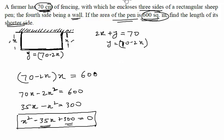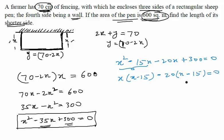So we can split minus 35 as minus 15x minus 20x plus 300 equal to 0. Let us take x common. So it will give us x minus 15 and in the second case, let us take 20 common. This will further give us x minus 15.